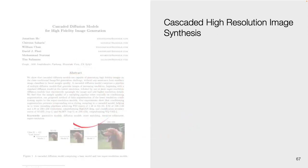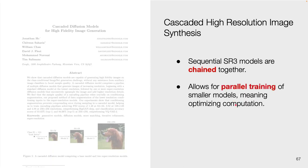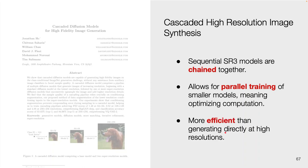Looking specifically at cascaded high resolution image synthesis, this paper brought initial testing of cascading SR3 models for this purpose. After this paper was published, the same authors released the CDM paper for high fidelity image generation. The idea of image synthesis here was done through sequential SR3 models chained together. Chaining smaller models allowed for efficient parallel training that requires fewer parameters and easier computation overall, with more refinement steps at lower resolutions and fewer at higher resolutions, enabling efficient performance.